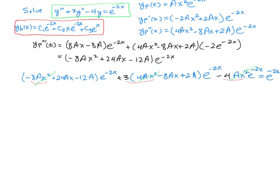Moving to the x terms, we have positive 24ax and negative 24ax (3 times negative 8). So those cancel out as well.